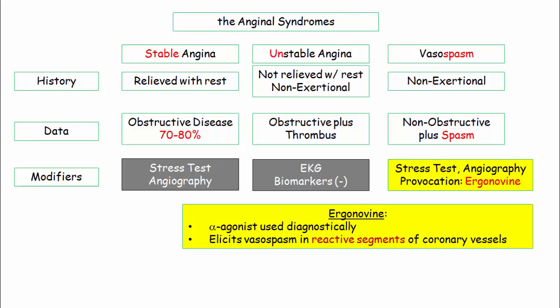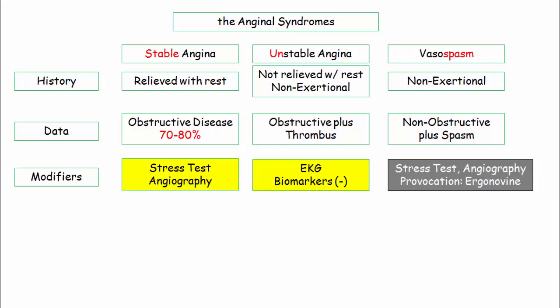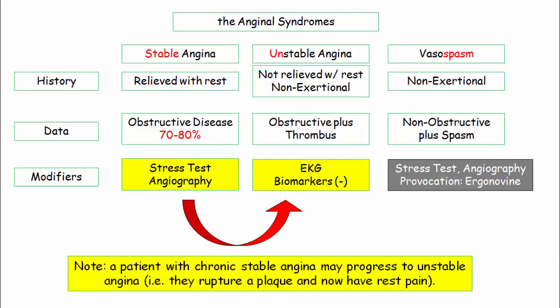For stable angina, a stress test might be described with ST-segment changes during exercise that resolve during recovery, or angiographic findings of the flow-limiting lesion — more often they will describe a patient with stable angina and ask you to correlate with an angiographic finding including an obstructive lesion of at least 70%. The patient with unstable angina will typically be described with ST-segment depressions and normal biomarkers. A patient with chronic stable angina can evolve into unstable angina — the typical question will be a patient with a previous pattern of stable exertional chest pain now having pain at rest, followed by a derivative question about plaque rupture and development of a partially occluding thrombus.